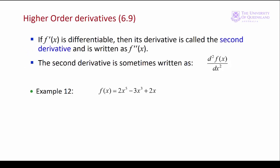Finding a second derivative is quite simple. Given the first derivative of a function, we just differentiate one more time. A necessary condition is that the first derivative is differentiable. That being so, we apply the differentiation to f prime of x. These are two of the most common ways of writing a second derivative.